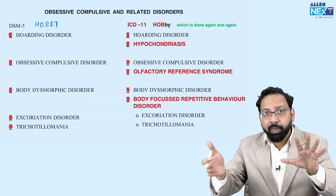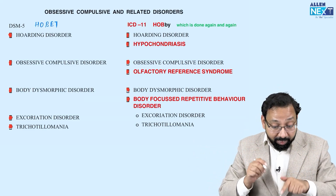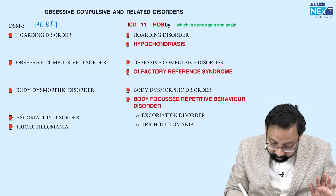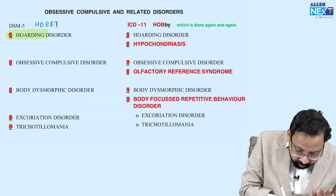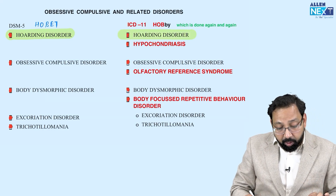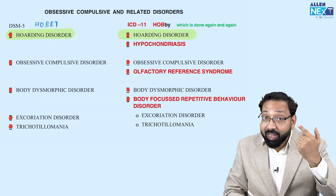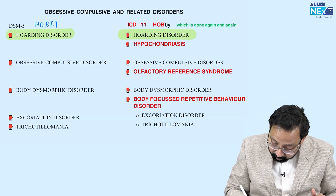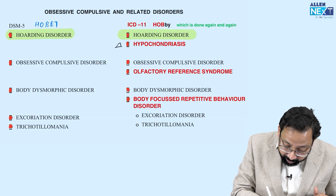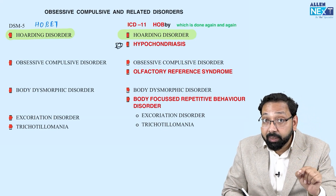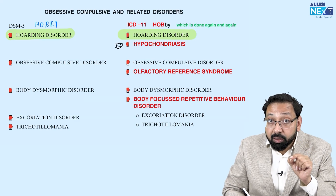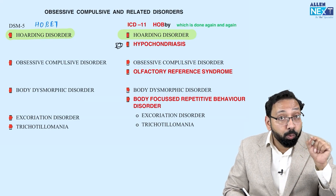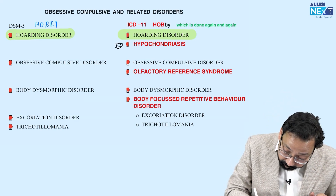ICD-11 includes seven disorders. Hoarding disorder is the same as in DSM-5. One more entity with H — H for hypochondriasis. Importantly, hypochondriasis was a somatoform disorder in ICD-10, but in ICD-11, it is now classified under obsessive compulsive and related disorders.